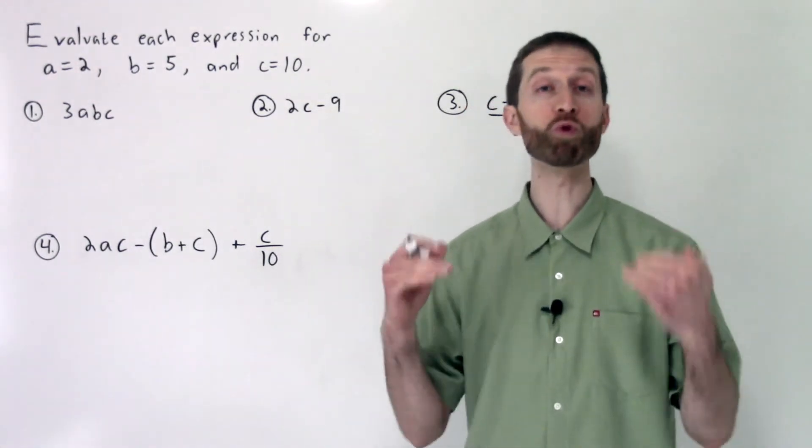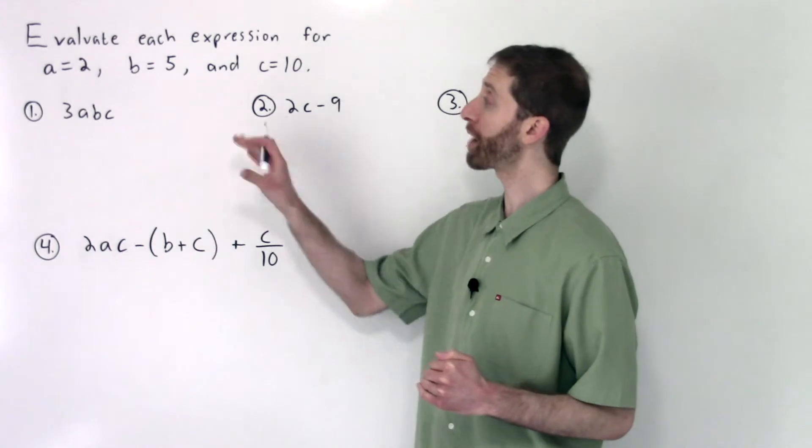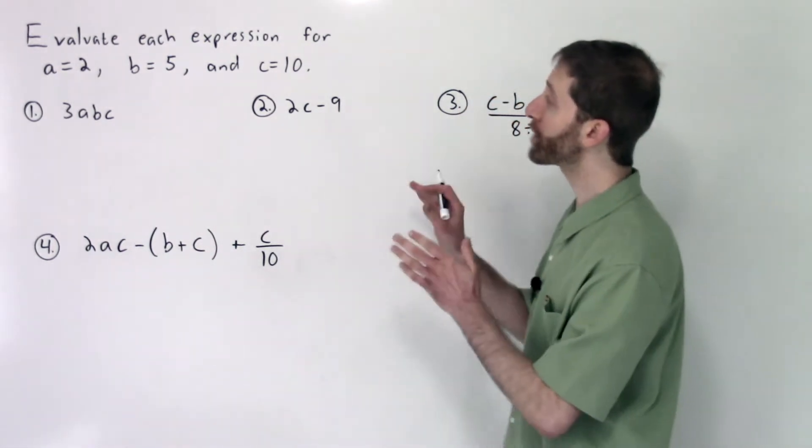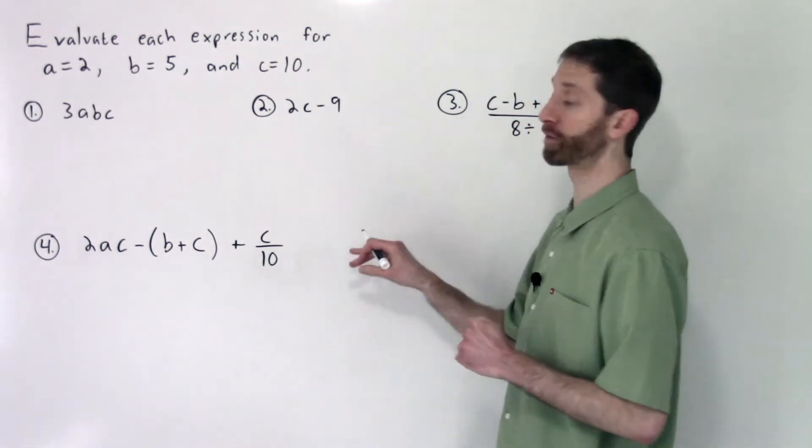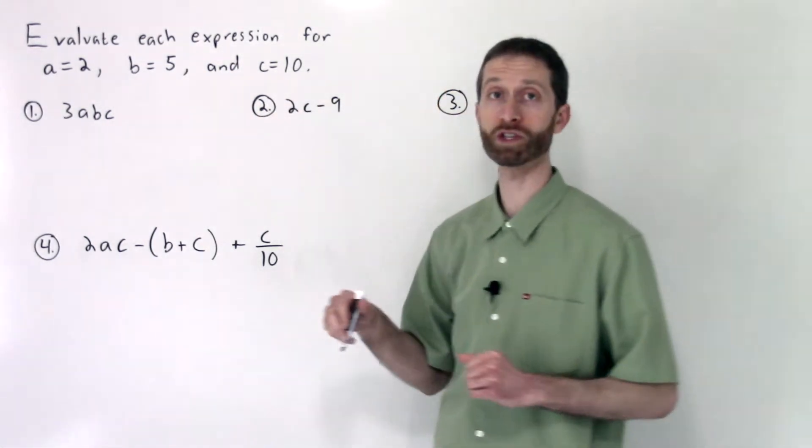In this video we are going to rock some multi-step evaluation problems. Let's jump right into them. To evaluate each of these four expressions for A equals 2, B equals 5, and C equals 10 is our goal.